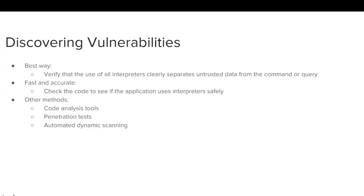There are multiple ways to discover injection vulnerabilities. The best method is to verify that the use of all interpreters clearly separates untrusted data from the command or query. A second fast and accurate method is to check the code and see if the application uses the interpreter safely. While not as effective, code analysis tools, pen tests, and automated dynamic scanning can also assist in detecting vulnerabilities.